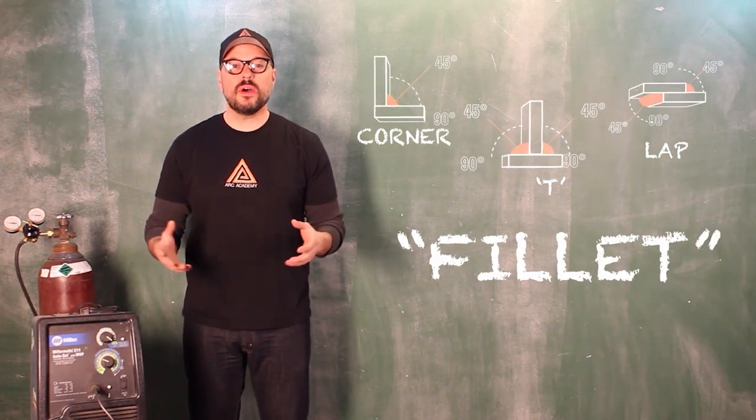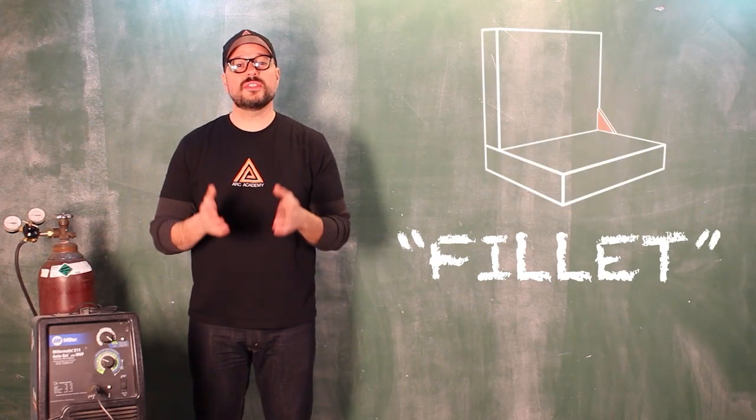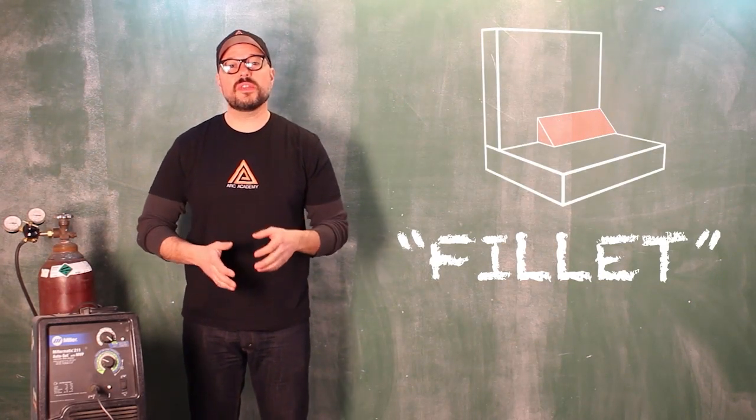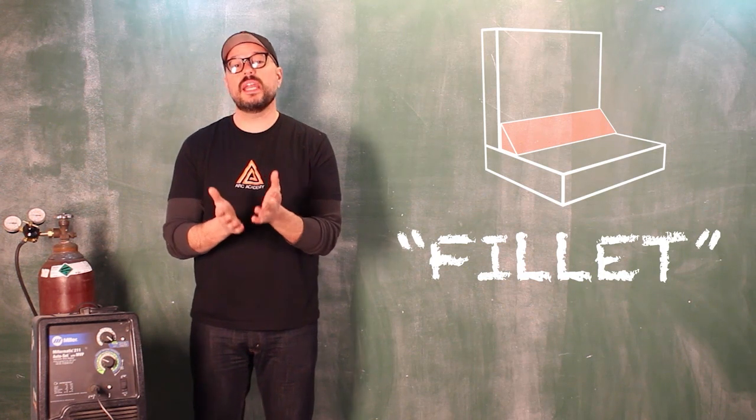What is a fillet weld? Well, a fillet weld is a triangular weld that is conducted on two pieces of material that form roughly a 90 degree angle from one another.